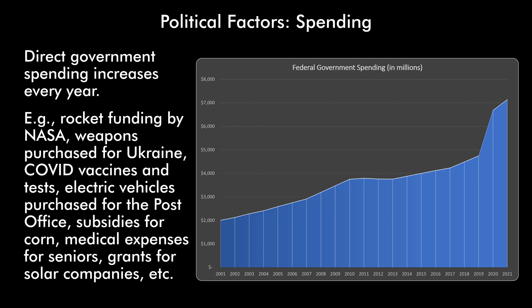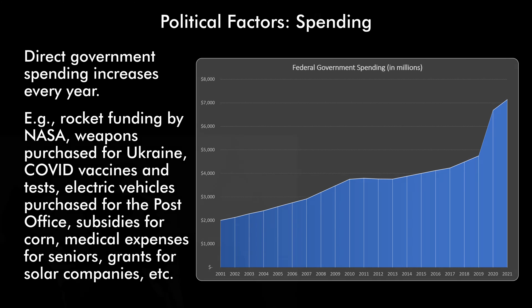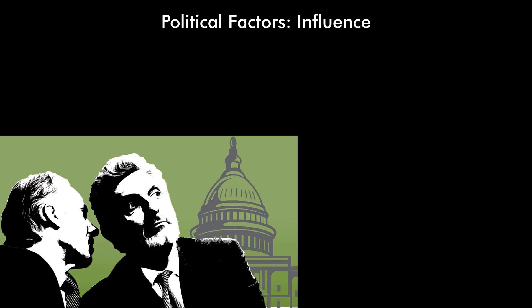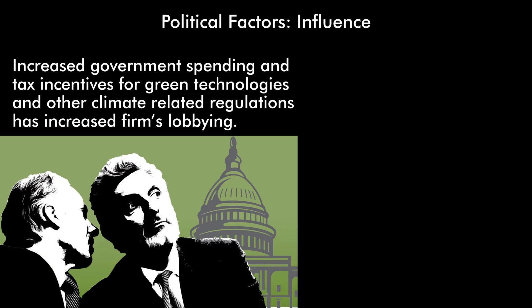One important factor is government spending. Direct government spending has increased every year. For instance: rocket funding from NASA, weapons purchased for Ukraine, COVID vaccines and tests provided by the government, electric vehicles purchased for the post office, subsidies for corn, medical expenses for seniors, grants for solar companies, etc. And that's only the federal government — we also have spending at other layers. As government influences business, business also tries to influence government, trying to get some of this spending.